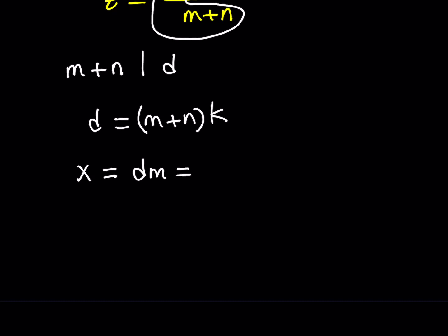which is m plus n times km. Or if you want, you can write it as km plus or km times m plus n. So, this is x.